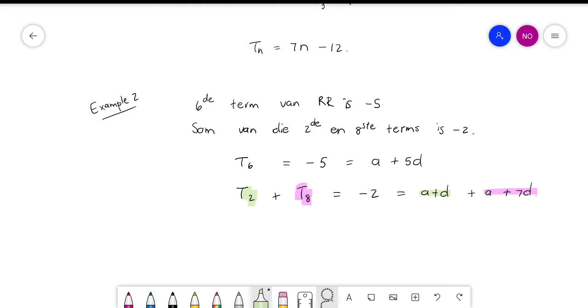Term 2 I must write as a plus d. Term 8 I can write as a plus 7d. So if they say the sum of the two is minus 2, then I'm going to add the two together to get minus 2.